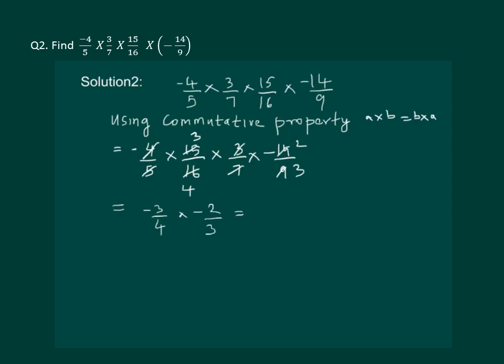Which is same as solving further, 2 and 4 and 3 and 3 get cancelled to 1/2. Hence commutative property has made solving the question easier as it allows us to rearrange the question.